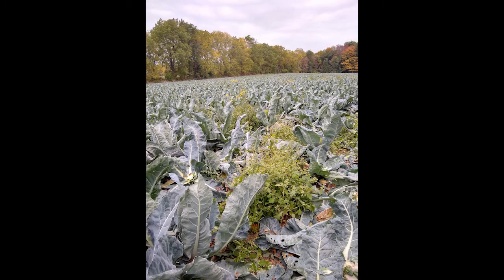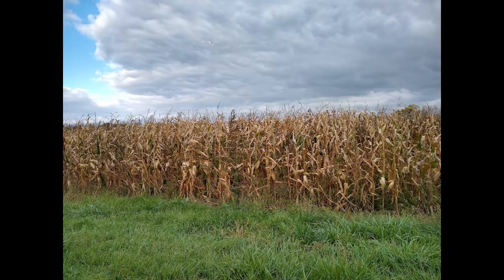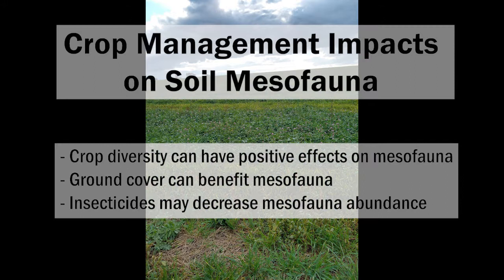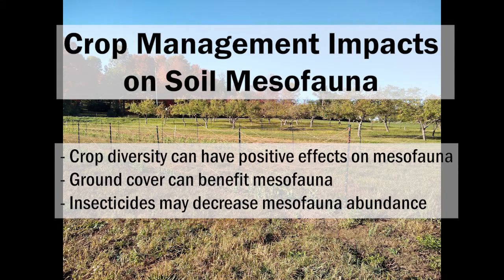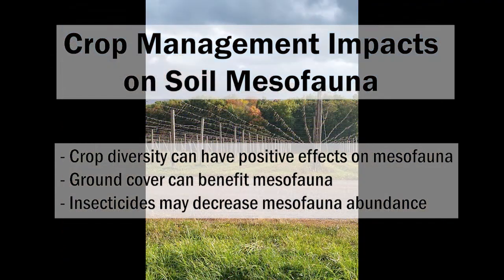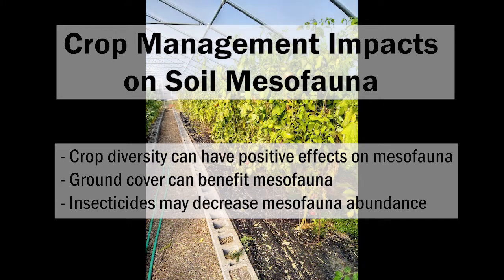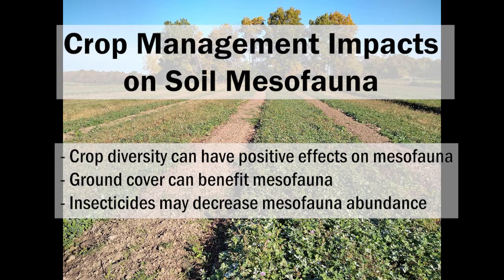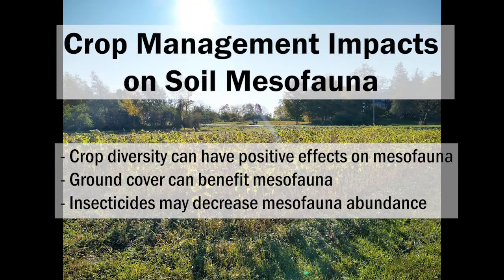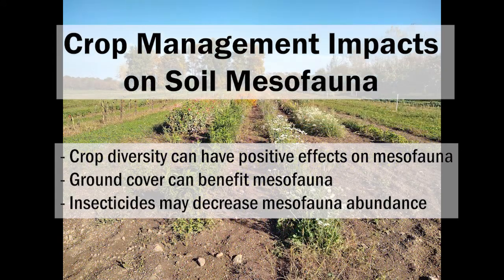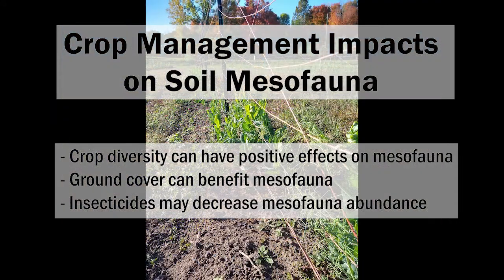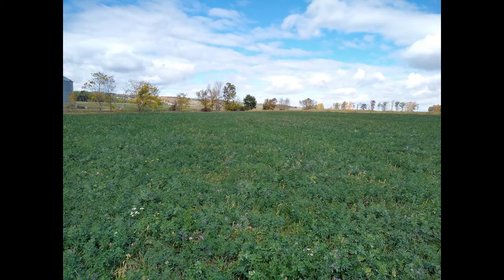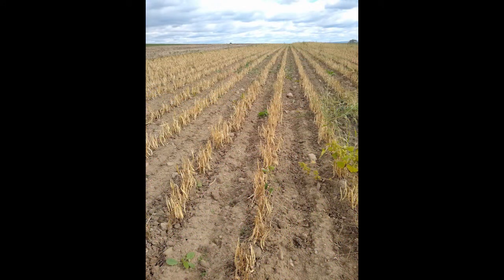Across a variety of farms that varied in crop rotation and management practices, we observed some interesting trends. Crop diversity — both incorporating more diverse crop species and rotations and increasing diversity through intercropping practices — had positive effects on mesofauna abundance and diversity. The amount of ground cover was also related to mesofauna abundance, with more dense ground cover promoting more abundant mesofauna communities. Lastly, the application of insecticides to control crop pests decreased the amount of mesofauna, since many of these active ingredients affect mesofauna similarly to the way they affect insects. Overall, management decisions to reduce soil disturbance and feed the soil's biological food web resulted in more abundant and diverse mesofauna communities.